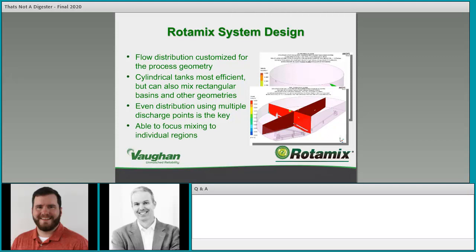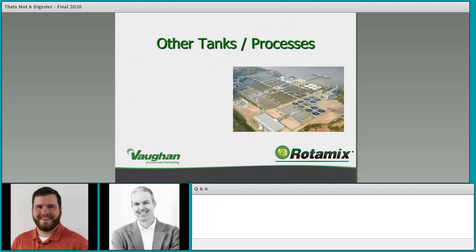We're also able to focus mixing on individual regions, which is especially valuable for different process tanks where you might have certain regions you're trying to mix aggressively and other regions you're not concerned about. You can really drive down your energy costs and still maximize process efficiency by focusing mixing through different regions and not wasting energy where you don't need it. We'll talk about lift stations, CSO basins, EQ basins, FOG/high-strength waste and septage receiving, sludge blend tanks, and sludge storage tanks.